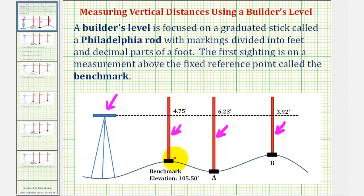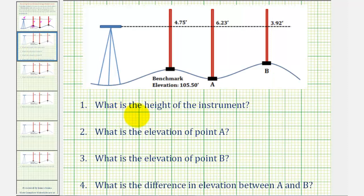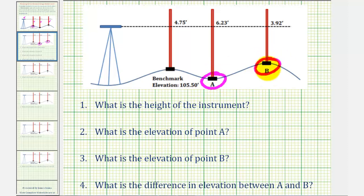Our benchmark is this point here with a known elevation of 105.5 feet, or 105 and 50 hundredths feet. Let's take a look at our questions. We first want to determine the height of the instrument, which we can think of as the elevation of the builder's level. Next, we want to find the elevation at point A, the elevation at point B, and then find the difference in elevation between point A and point B.